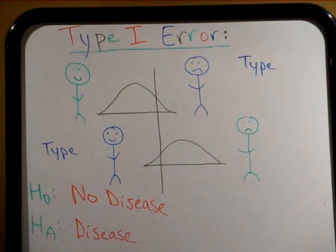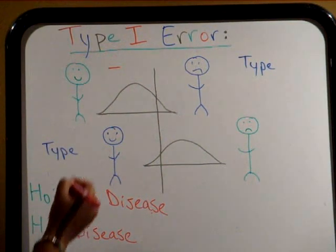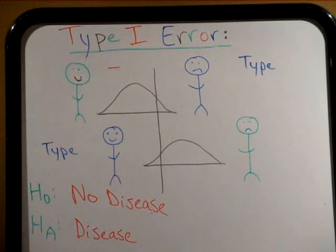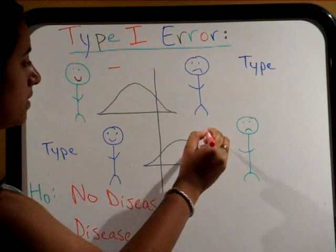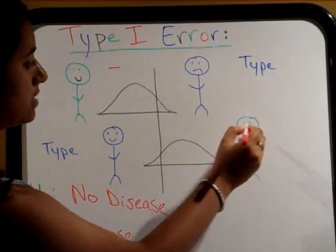If a medical test comes up negative, then the doctor concludes that the person does not have the disease. But if the test comes up positive, then the doctor concludes that the person has the disease.